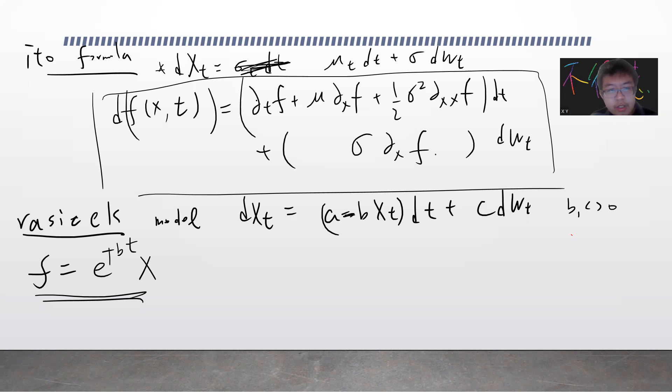What Itô's formula is very powerful for is when somebody gives you dXt = μt dt + σ dWt or σt dWt. You can compute df to be ∂t f plus μ times ∂x f...